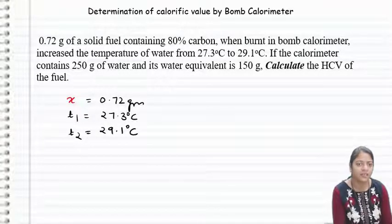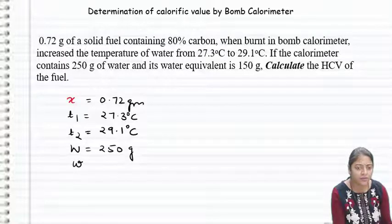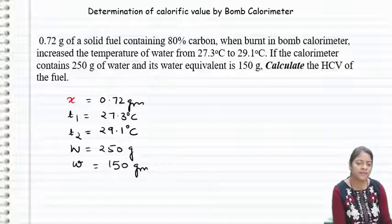If the calorimeter contains this gram of water, so we have capital W, 250 g. And its water equivalent, small w, so its value is 150 g. Calculate the HCV of the fuel.